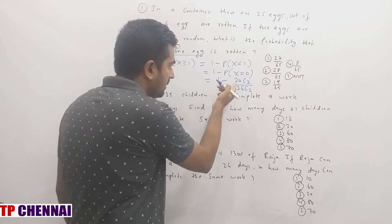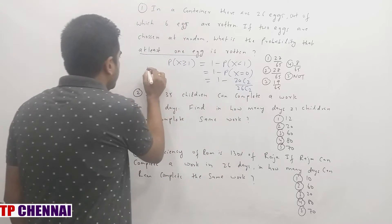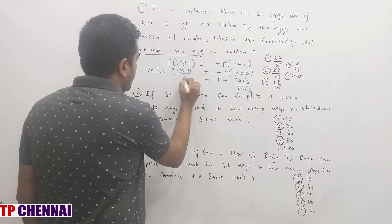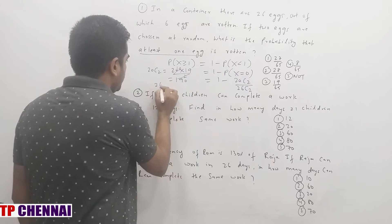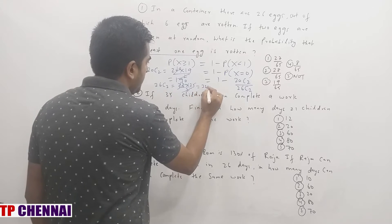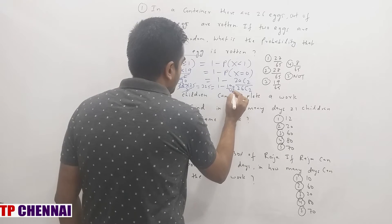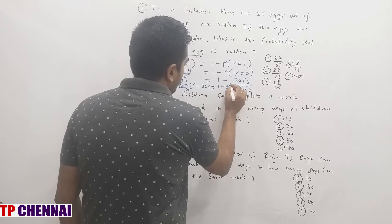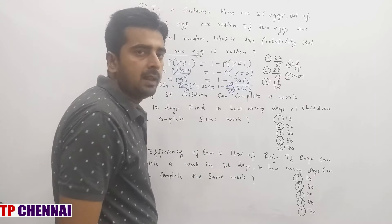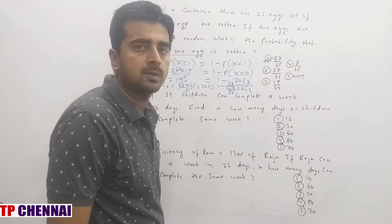Calculate separately: 20C2 = 20×19/2 = 190. And 26C2 = 26×25/2 = 325. So the answer is 1 minus 190/325. Cancel by 5: 1 minus 38/65 = 27/65, which is the first option.